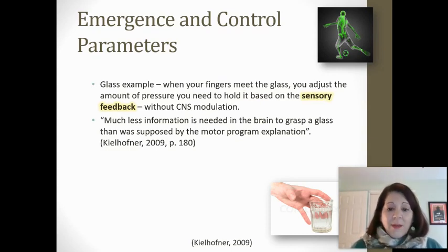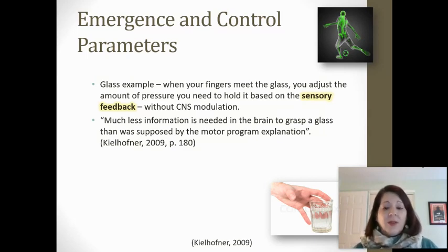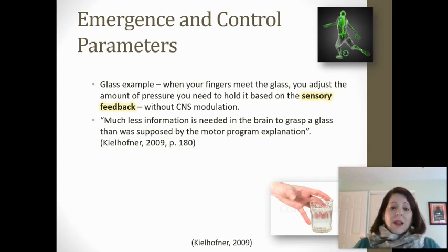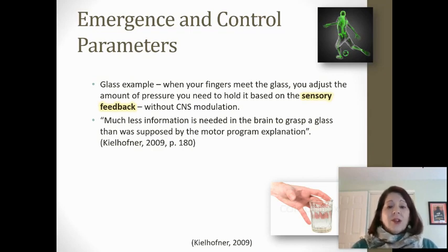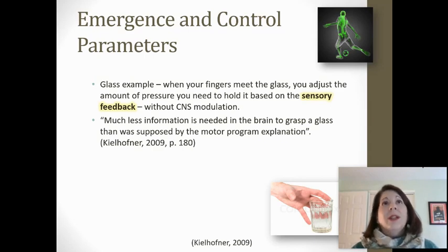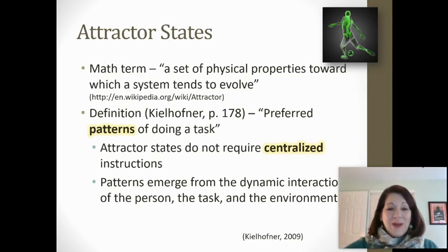As you think about that activity with the different glasses and drinking objects, what was the role of sensory feedback? How did the sensory feedback from the objects you touched change your emergence? Motor learning theory says that the central nervous system doesn't even have to modulate this — it occurs at the spinal level, and much less information is needed in the brain to complete that movement than we previously thought with motor control or motor program explanations.